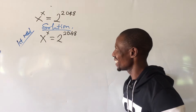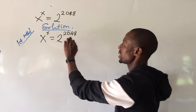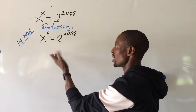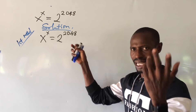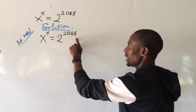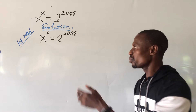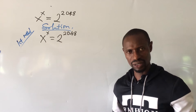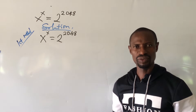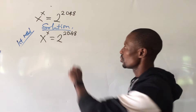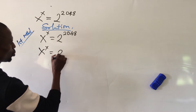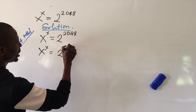We put down our question: x to the power of x equals 2 to the power of 2048. The first thing that comes to mind is that we have x to the power of x — can we have a particular number raised to itself? We have base 2 and the exponent 2048. If you raise 2 to the power of 11, it gives us 2048. So this expression can be written as x^x = (2^2)^11.